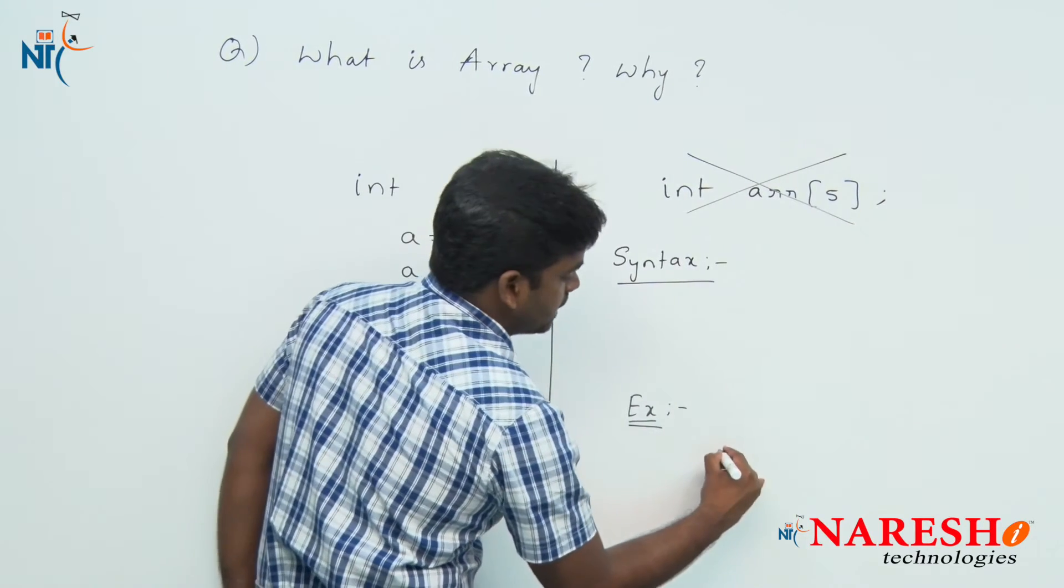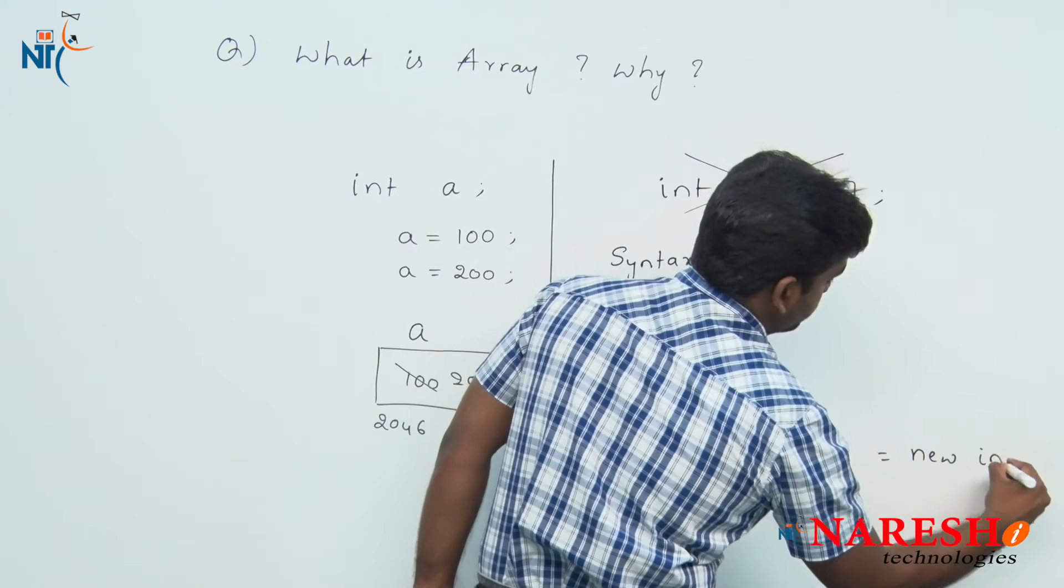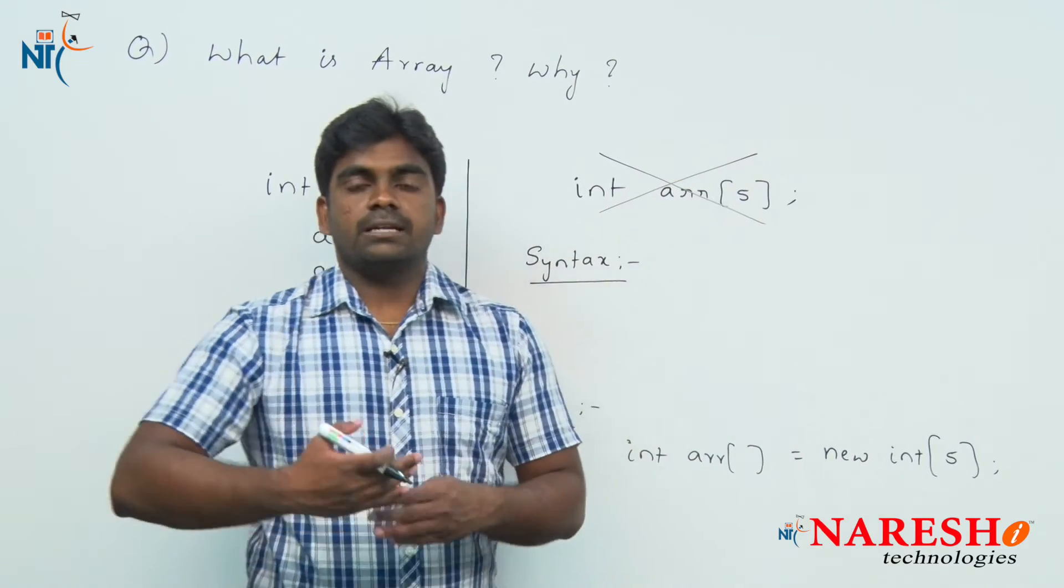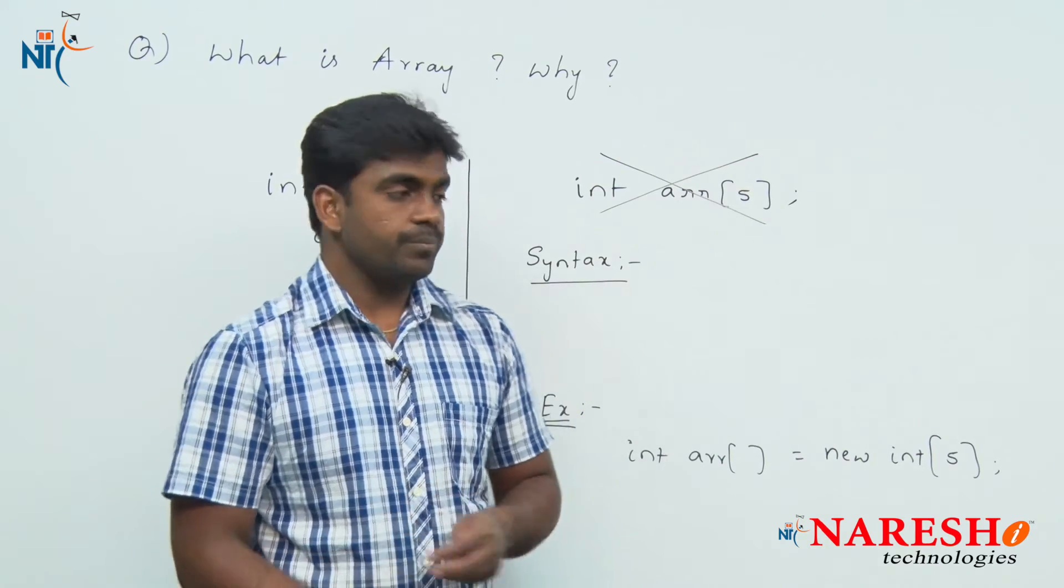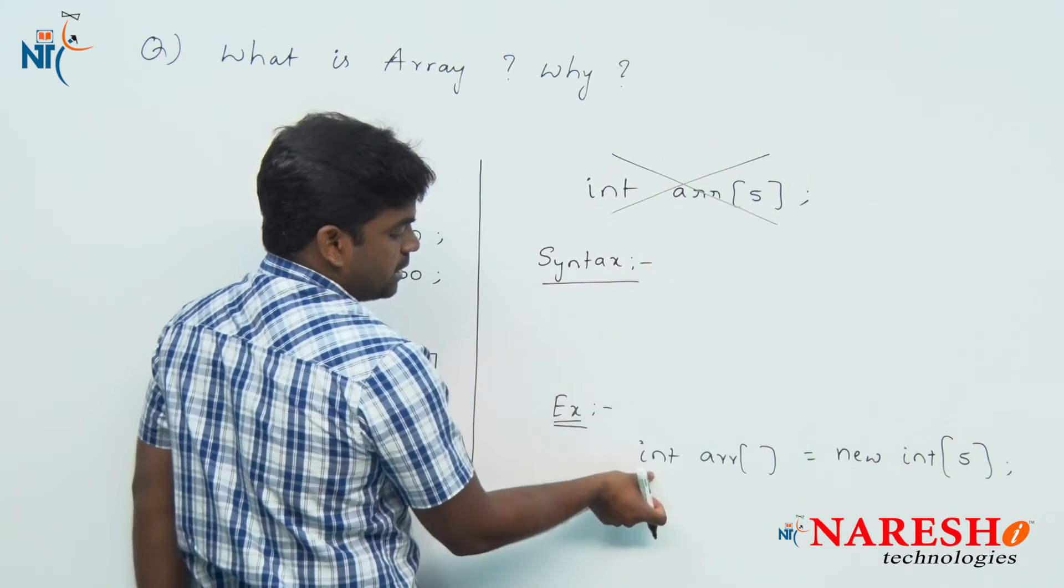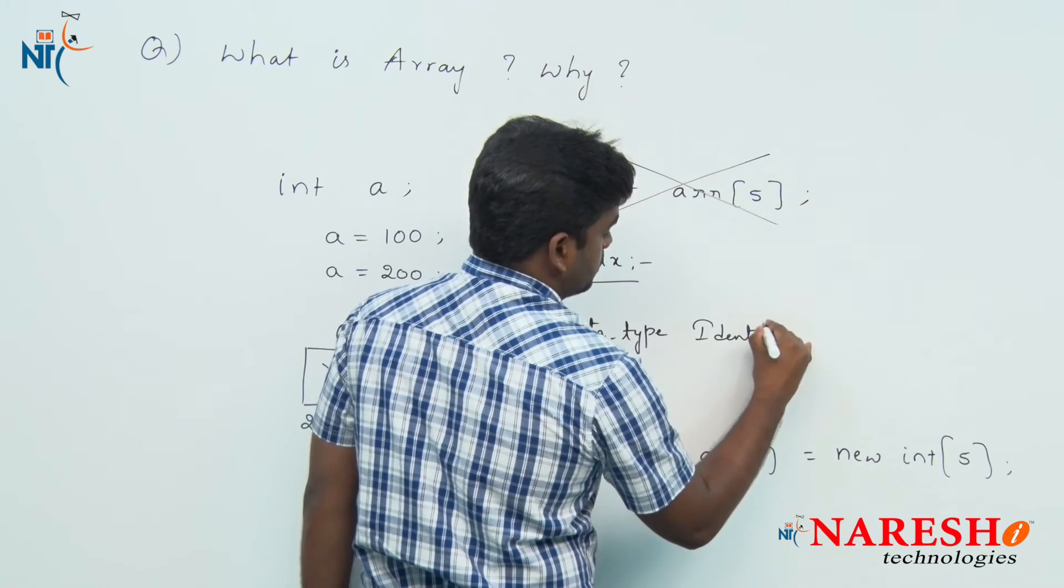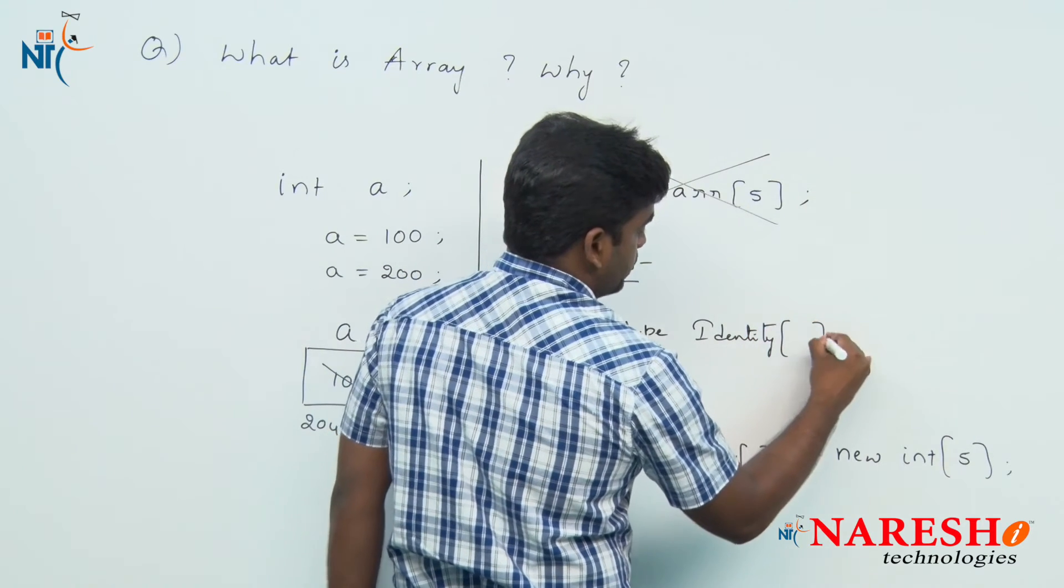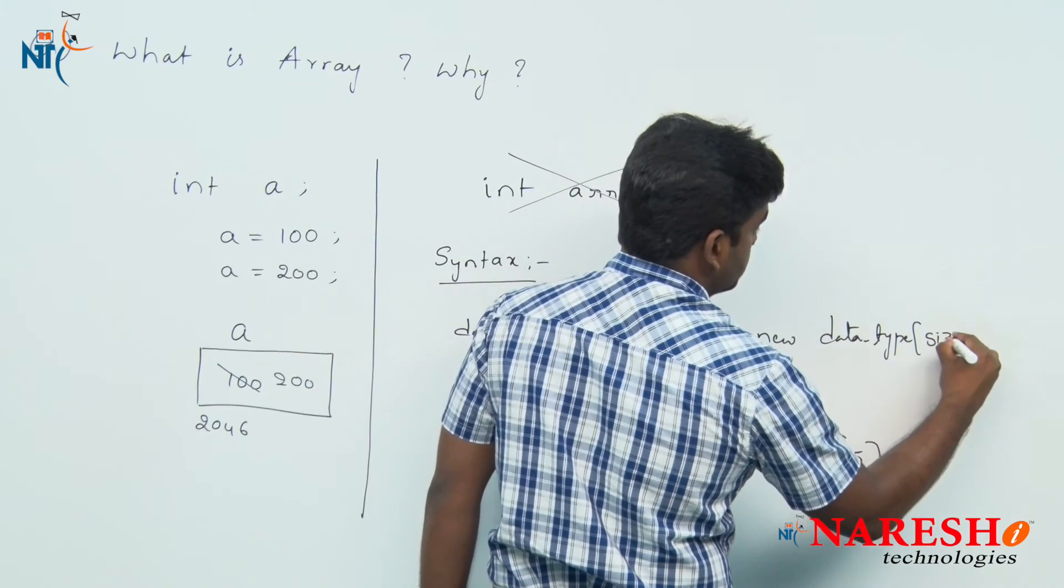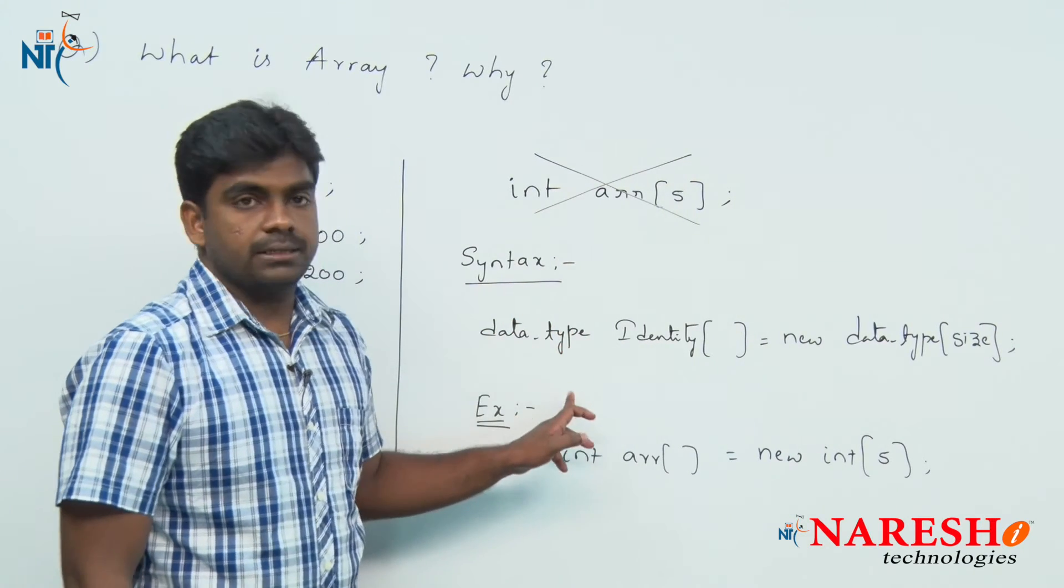If you want to declare integer array: int array name arr, and here we should specify the size with the help of new. The new operator executes at the time of application execution, so memory will be allocated at runtime while application is running. According to this syntax, we can write: int is the data type, arr is the identifier or name, square brackets equals to new, and here is the data type of size. This is the syntax for how to declare array inside Java.